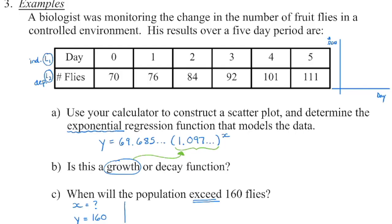This question specifically asks for exponential regression and doesn't tell me what to round those values to, so I left them as whole numbers. Every function needs to begin with y equals and include the variable x. You could substitute d in place of x to represent days, and f in place of y to represent flies. The second question asks whether it's growth or decay — because the b value is greater than one, that indicates it's a growth function.